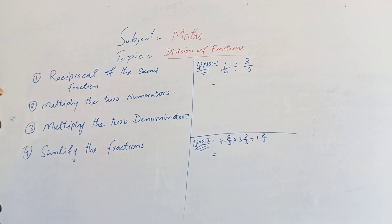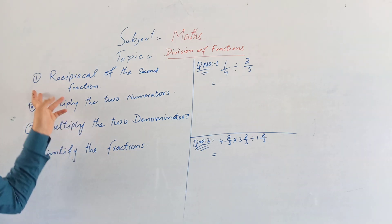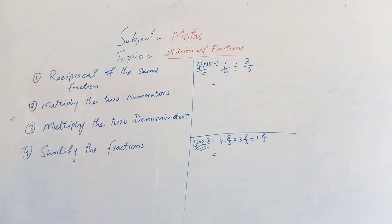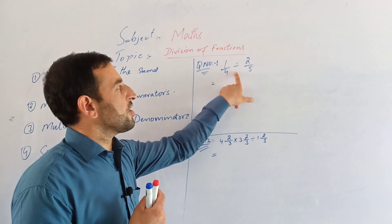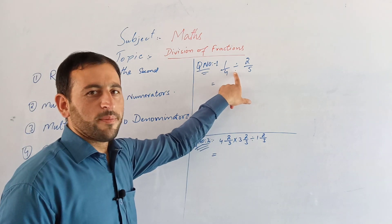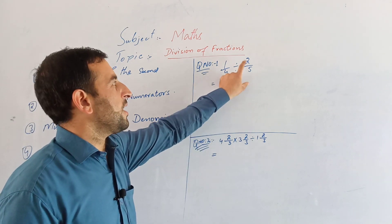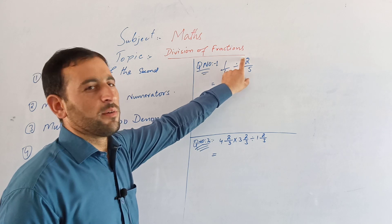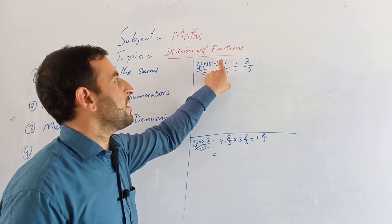The first step is to find the reciprocal of the second fraction. The first step is to change the division symbol to multiplication.